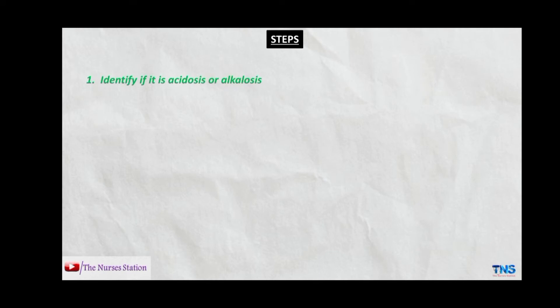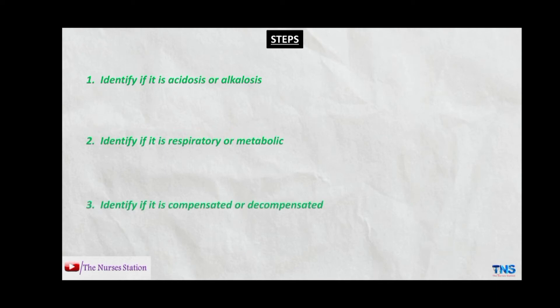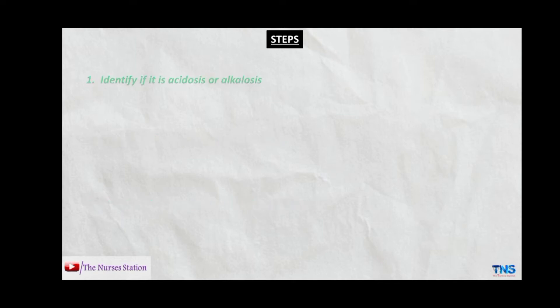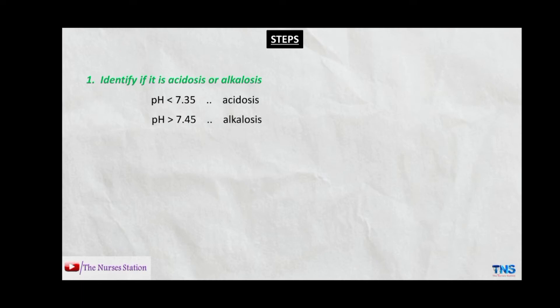Now let's dive into the steps of ABG interpretation. There are basically three steps: first, identify if it is acidosis or alkalosis; second, identify if it is respiratory or metabolic; and third, identify if it is compensated or decompensated. For step one, the normal range of pH is 7.35 to 7.45 — a pH less than 7.35 indicates acidosis and a pH more than 7.45 means alkalosis.